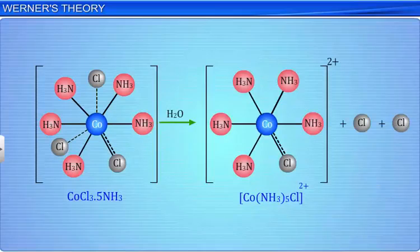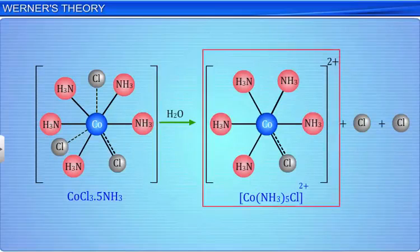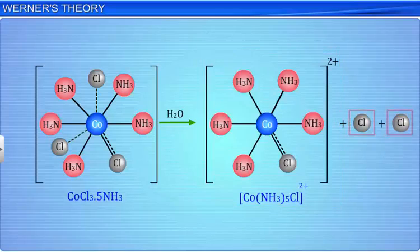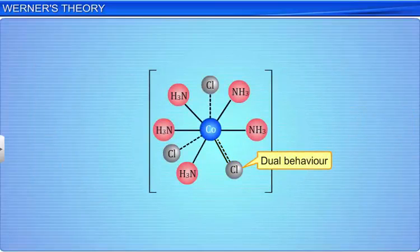As can be seen from its structure, 1 chloride ion which is playing a dual role is shown by a thick as well as a dotted line.